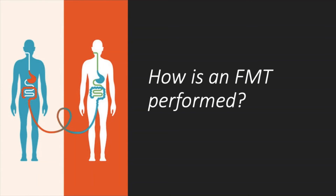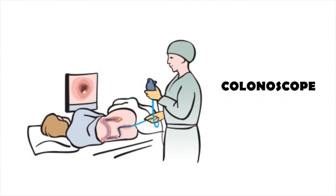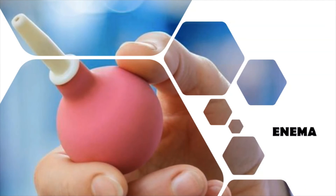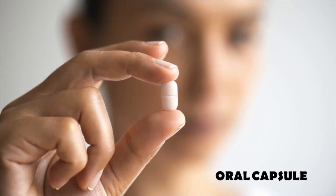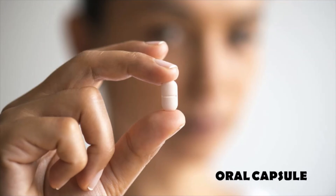In most cases, a doctor will deliver the donor feces to the sick patient through a colonoscopy — a small, flexible tube inserted into the colon through the rectum. Another approach involves injecting liquid feces via an enema. A newer and more common method of an FMT is the use of an oral capsule, which contains a stool preparation. Compared to colonoscopy and an enema, an oral capsule is less invasive and can be taken in a medical office or even at home.